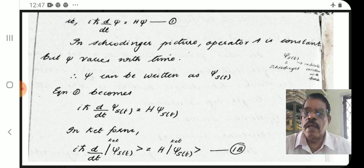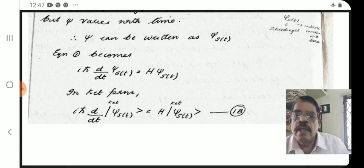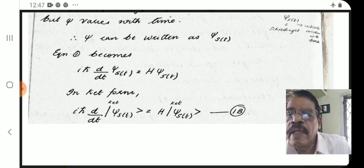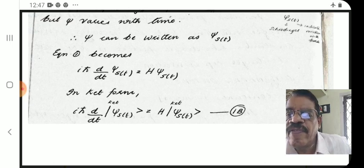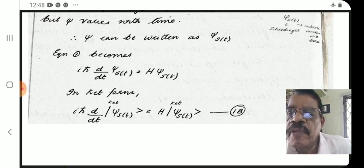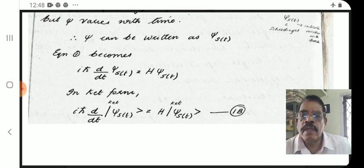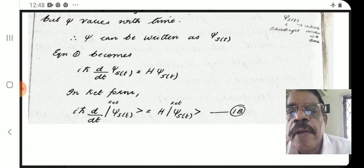We convert this into ket form using Dirac notation — the ket and bra notation we have studied previously. A wave function can be written in ket form and its conjugate in bra form. In ket form: iℏ d/dt |psi_S(t)> = H |psi_S(t)>, which is equation 1b.